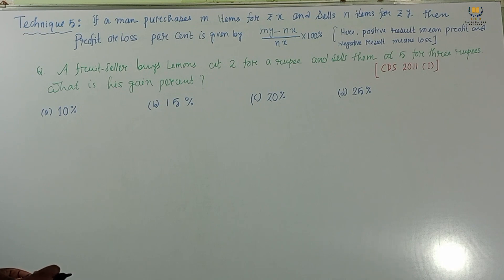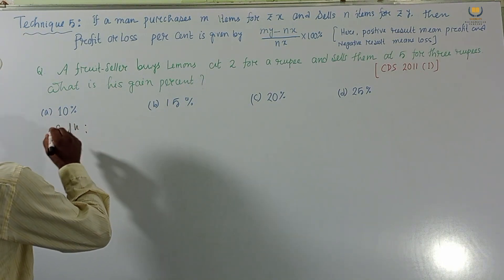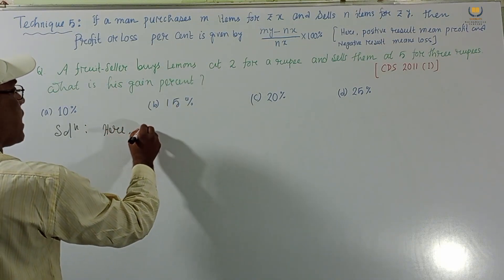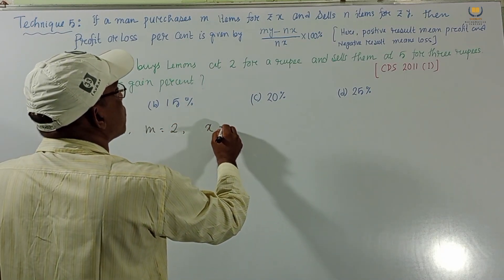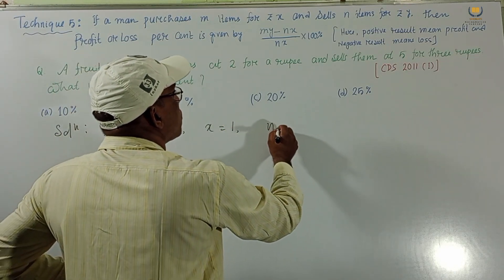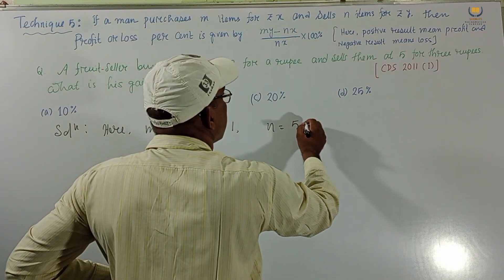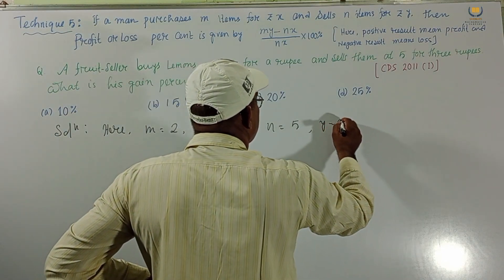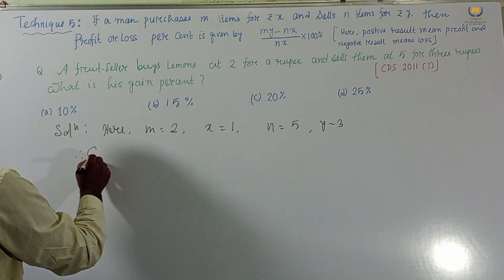We solve this using the shortcut method. Here m equals 2 and x equals 1 rupee. n equals 5 and y equals 3 rupees. These are the values given in the problem.